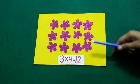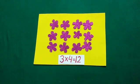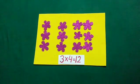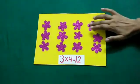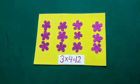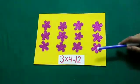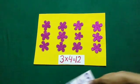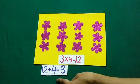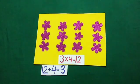Now, I want to divide these 12 flowers in 4 parts. So I will make 4 groups of these flowers. In each group we have 1, 2, 3 flowers. It means 12 divided by 4 is equal to 3.